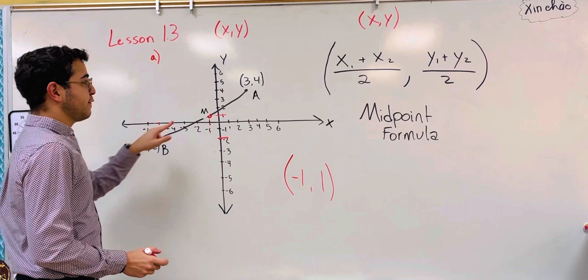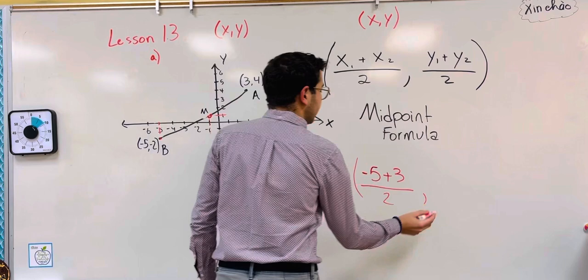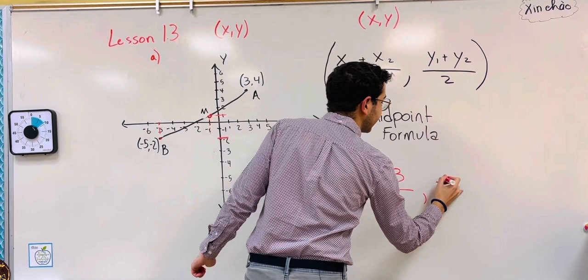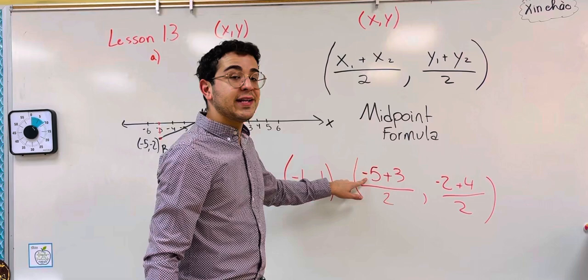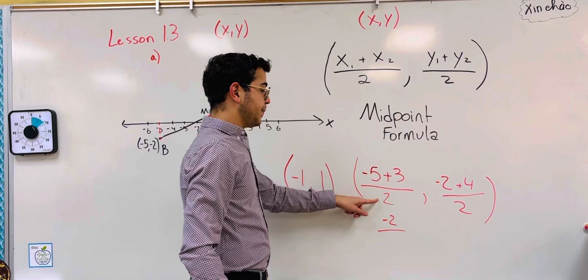The values of X are negative five and three. So we would take negative five plus three, and we will divide that by two in the end. We would put that in a coordinate. Now we're going to do the Y. So Y is negative two and four. The order here doesn't matter. Negative two and four. So let's do negative two plus four divided by two. If I owe someone five dollars and I give them three, if I'm at negative five and I get three, I still owe them two dollars. I'm still negative two. So negative five plus three is negative two.